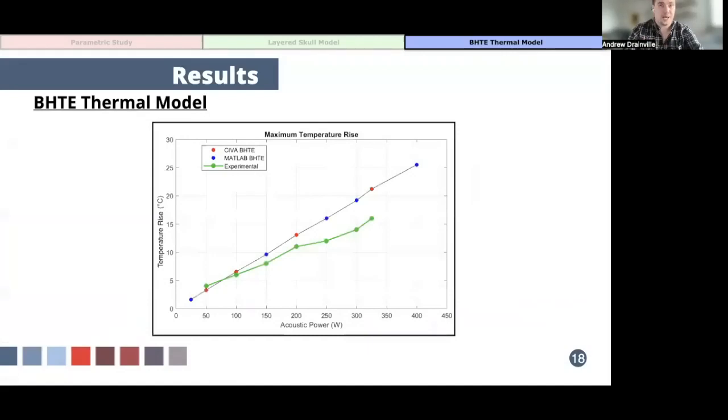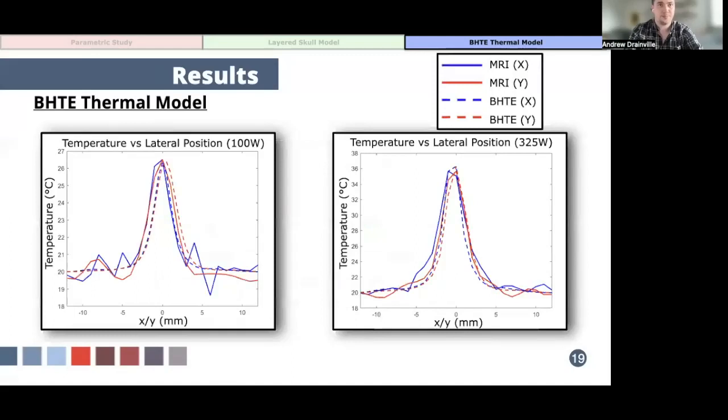When we look at the maximum temperature rise as a function of acoustic power, there's very strong agreement between the experimentally measured temperatures and the values we obtained from simulation. And if we look at the temperature distribution at the target for two different values of acoustic power, 100 watts on the left and 325 watts on the right, we see good agreement between these two results, where the blue line denotes the temperature along the forward-backward axis, and the red line along the left-right axis, with experimental data shown as the solid lines and simulation data as the dashed lines.